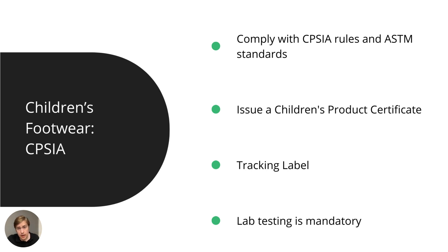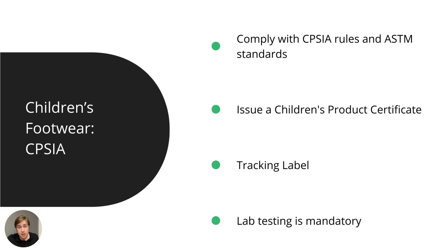In practice, you need to ensure compliance with CPSIA rules and ASTM standards, which cover everything from substance restrictions — such as lead content limits and bans on certain phthalates — to mechanical safety and small parts requirements. You also need to issue a Children's Product Certificate, or CPC, which must be supported by a test report mentioning the specific CPSA rules and ASTM standards followed, along with product information, your company information, and details about the testing company.